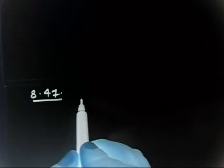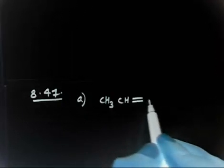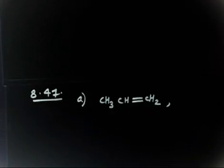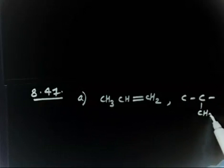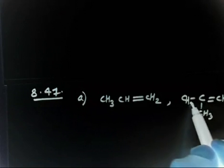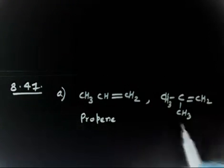In the following cases, you have to tell me which is more reactive to HBR addition. For part A, I have two molecules: propene, written as CH3-CH=CH2, and 2-methylpropene, which has a methyl group CH3 on carbon two with CH3 groups. So this is simply propene and this is 2-methylpropene.